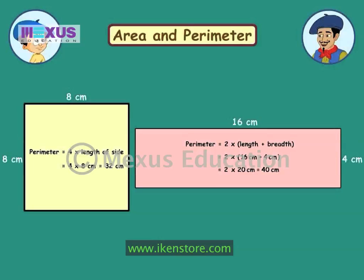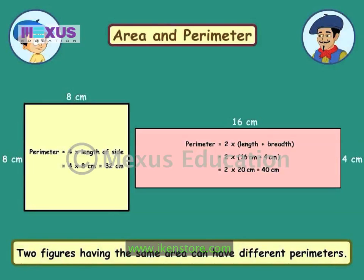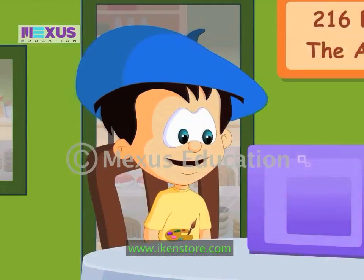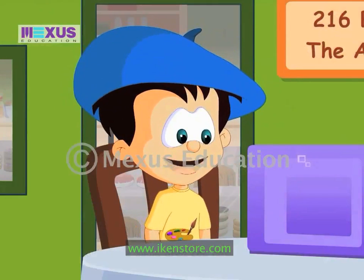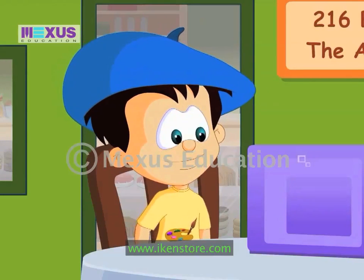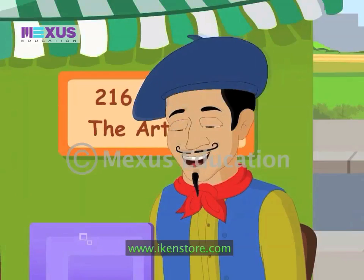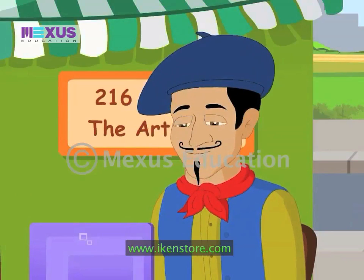Don't forget this: two shapes with the same area can have very different perimeters. Our clue has something to do with a shape with a bigger perimeter, that is, a rectangle. I think I remember seeing a painting called Rectangular Mosaic in the main gallery. Bingo! I know where it is. Come on!